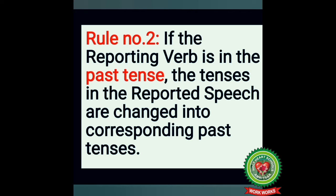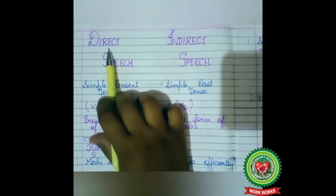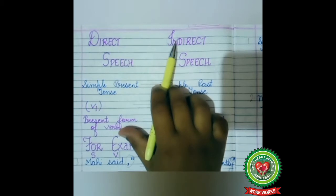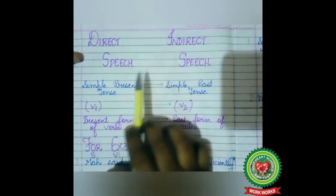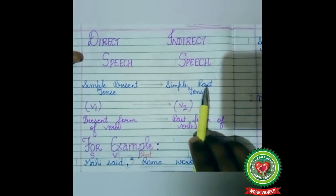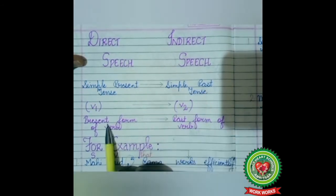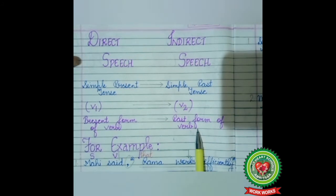Okay children, now we are going to discuss some examples. While changing direct speech into indirect, the rules are as follows: simple present tense changes into simple past tense. The rule of simple present tense is present form of verb, so the present form of verb will change into past form of verb.